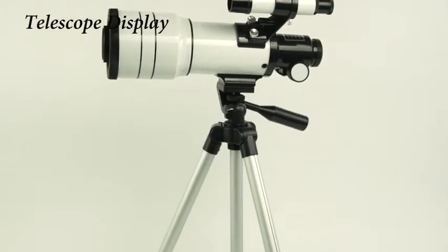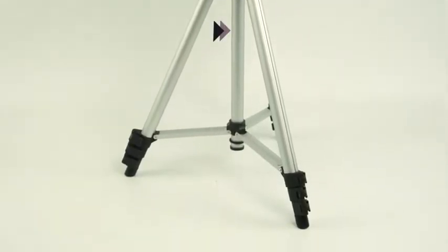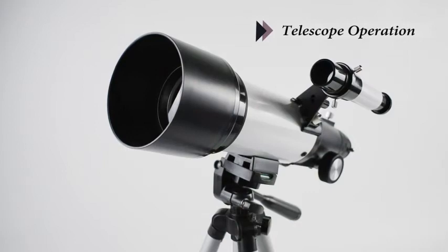After installing the telescope, remove the dust cover at both ends of the diagonal mirror, eyepiece, finder scope, and the telescope main tube.